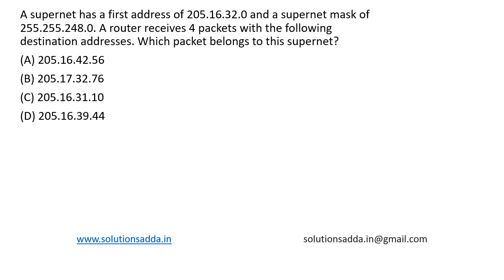This is a question from Computer Networks. A supernet has a first address of 205.16.32.0 and a supernet mask of 255.255.240.0. A router receives four packets with the following destination addresses. Which packet belongs to the supernet?